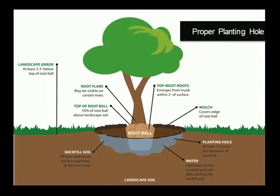Before digging the planting hole, call 811 to locate underground utilities in your landscape. Find the topmost root and treat root defects. Next, make the hole at least one and a half times the diameter of the root ball. Gauge the depth of the planting hole so that the top root is one to two inches above the landscape soil. No more than two to three inches of the root ball needs to be above the soil unless the site is poorly drained — if so, plant even higher. If the hole was dug too deep, add soil and compact it with your foot. Breaking up compacted soil in a large area around the tree, out to the drip line, provides the newly emerging roots room to expand into loose soil, hastening root growth and quicker establishment.